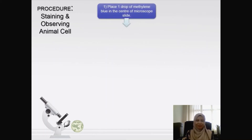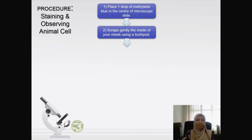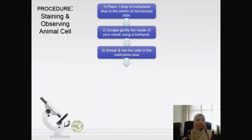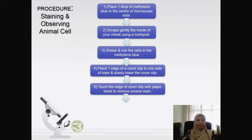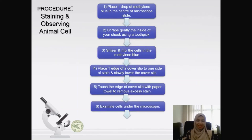For the procedure to stain and observe the animal cell, use methylene blue as the staining reagent. Place one drop of methylene blue solution in the center of the microscope slide. Gently scrape the inside of your cheek using a toothpick — be very careful — then smear and mix the cells in the methylene blue. Place one edge of a cover slip to one side of the stain and slowly lower it to cover the slide. Remove any excess stain with a paper towel and examine the cells under the microscope; draw and label them as your results.